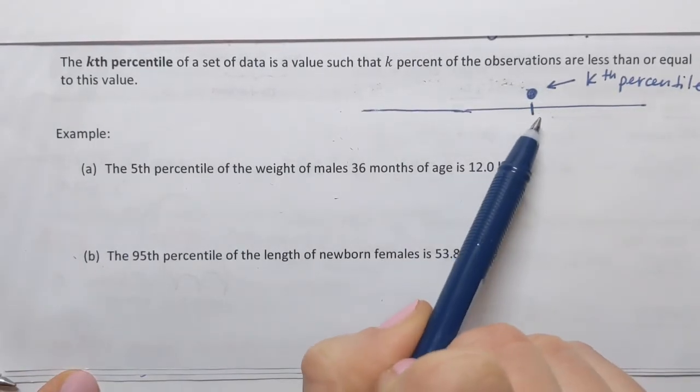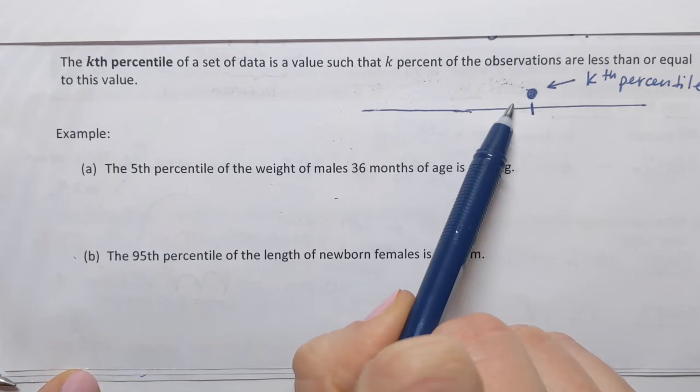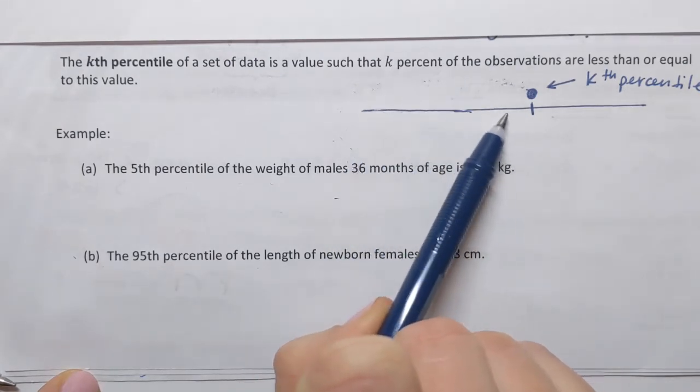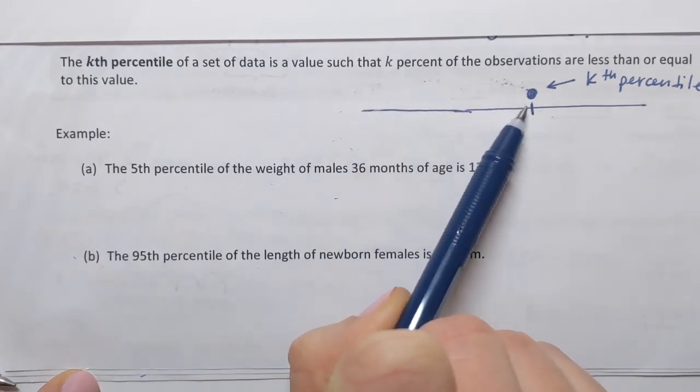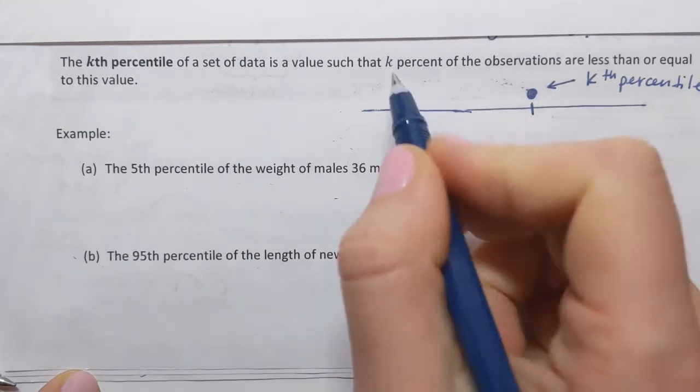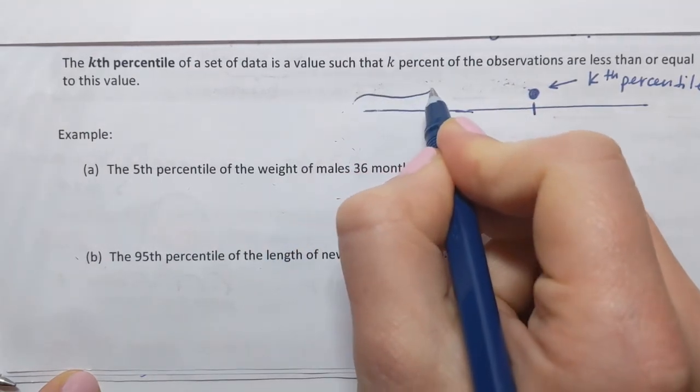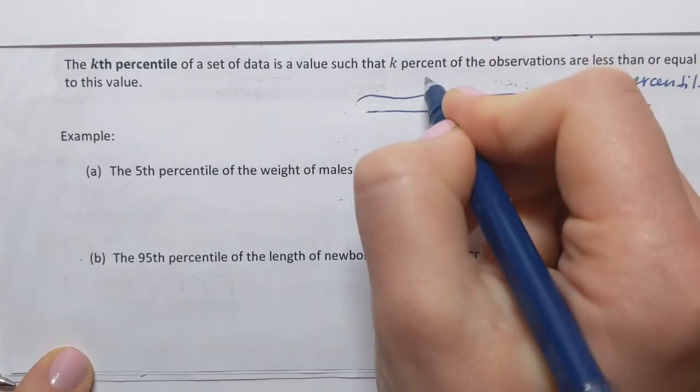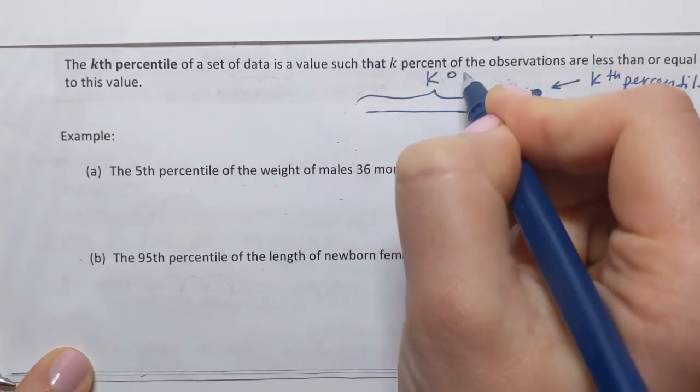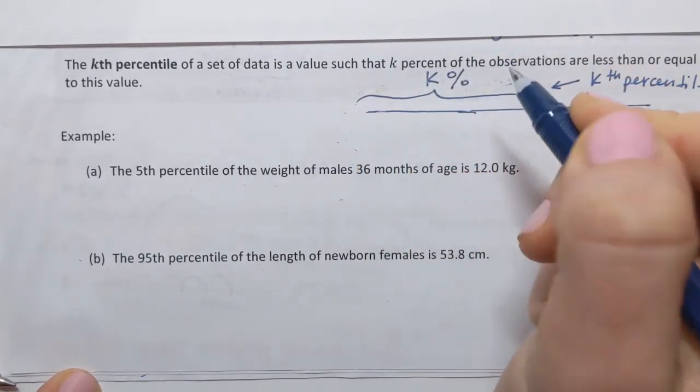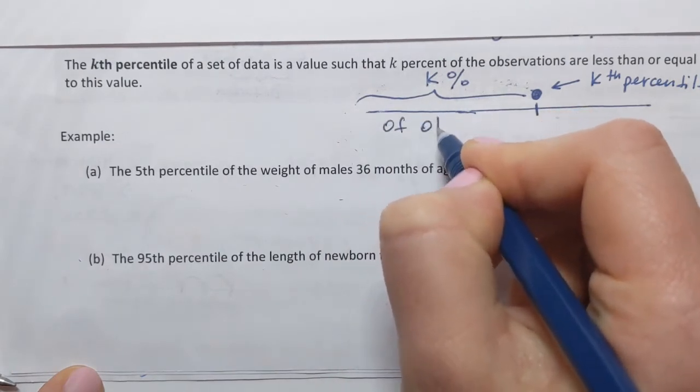This means that k percent of other observations would lie below the one we're looking at. So it means that they're less than or equal to the one that we're pointing at. So right here I will have kth percent of observations.